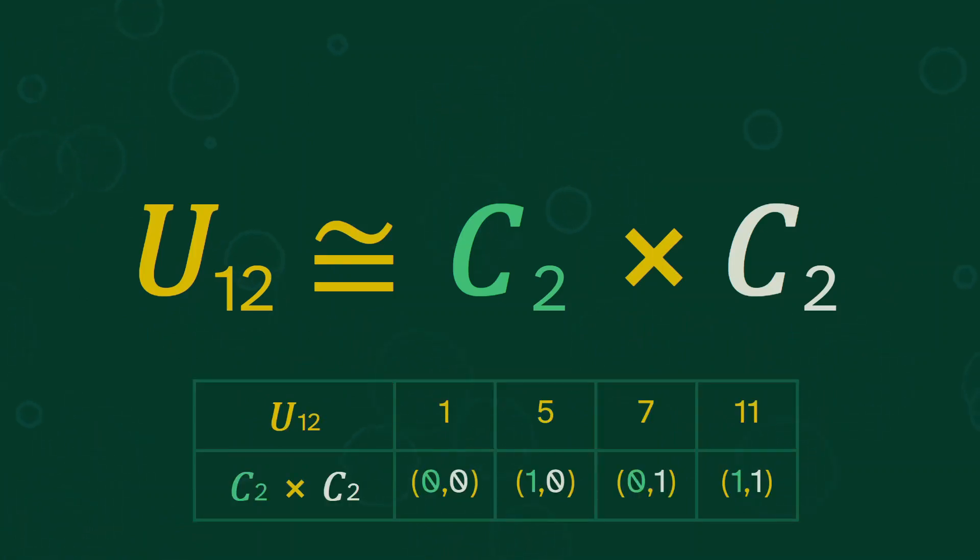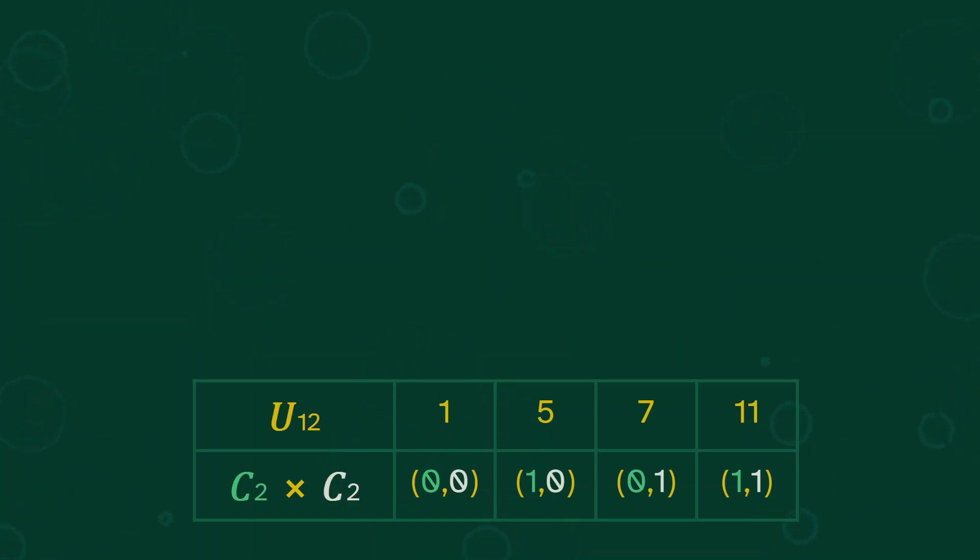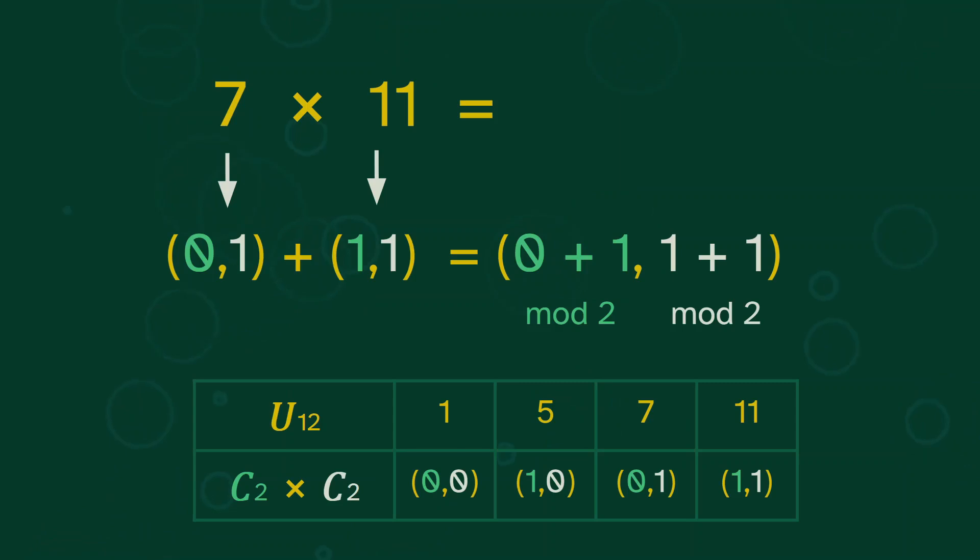And here is the map for that. So for example, to do 7 times 11, we map into 0, 1 and 1, 1. And then we add these pairwise. And then these are 2 cycle, so we add mod 2 to get 1, 0. And that maps back into 5.